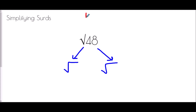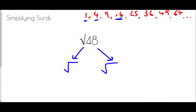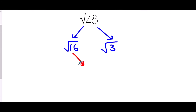So what square numbers have we got? Let's make a quick list: 1, 4, 9, 16, 25, 36, 49, 64. For 48, which of these go into it? Well 1, 4, and 16 would work. I always want to find the highest factor possible — so the biggest square number going into 48 is 16. So I have root 16 times root 3, since 16 times 3 is 48. We know root 16 is 4, so root 48 equals 4 root 3.